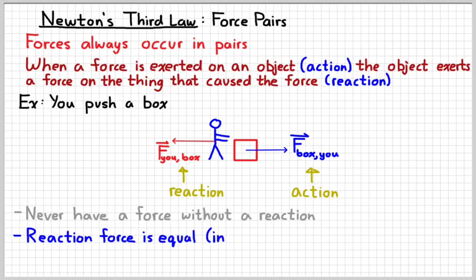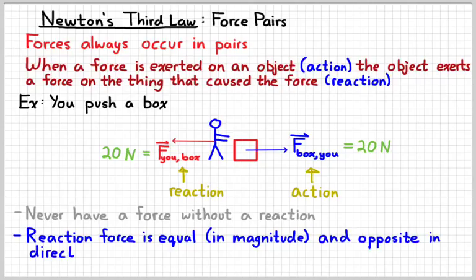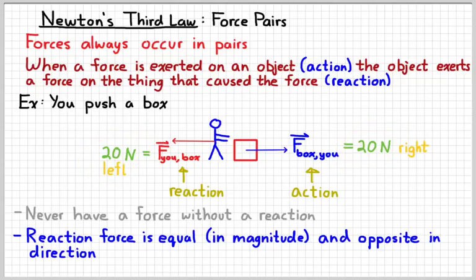Reaction forces are always equal to the action, and they are exerted in the opposite direction. So if the force you exert on the box is 20 newtons, then the reaction force on you is going to be 20 newtons. When you push a box to the right, it's going to push you to the left. Back in middle school you may have learned to recite that for every action there's an equal and opposite reaction — this is what it means. When you push on something, it pushes back with the same size force but in the opposite direction. We need to understand what it means and apply it to different situations.